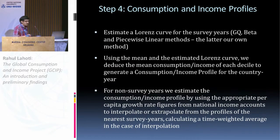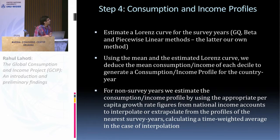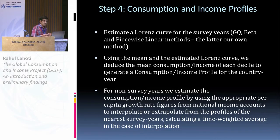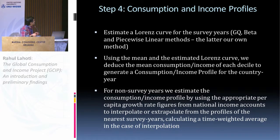The fourth step is to estimate the Lorenz curve from the distribution data. We use standard parametric regression methods, preferring the GQ (generalized quadratic) Lorenz curve form. If it fails to give a valid Lorenz curve, we fall back to beta Lorenz curves. At some points both fail and we use our own piecewise linear method. Once we have the Lorenz curves — most existing datasets do not estimate Lorenz curves and instead assume the same average income within deciles, which underestimates within-country inequality — we use the mean and the estimated Lorenz curves to get mean consumption and income levels for each decile or down to each ventile level.